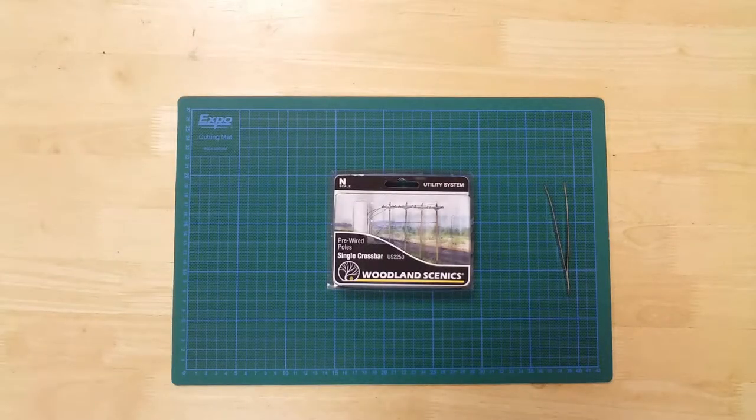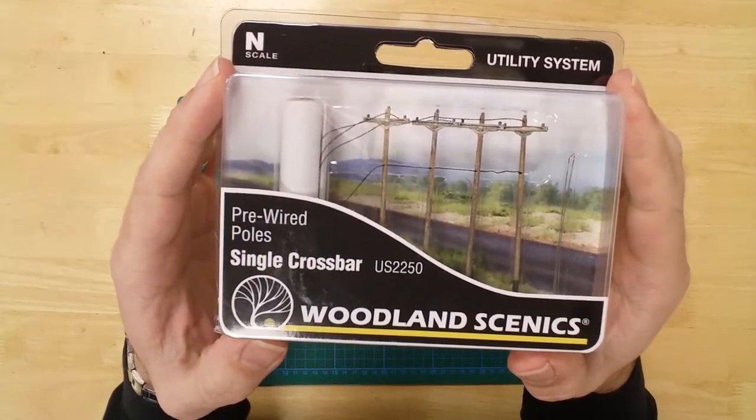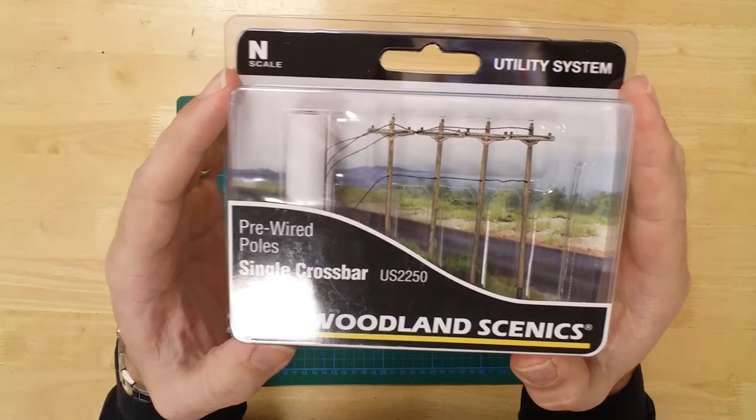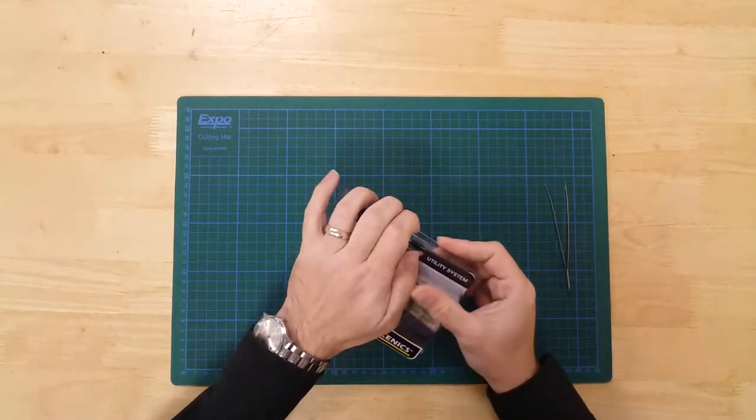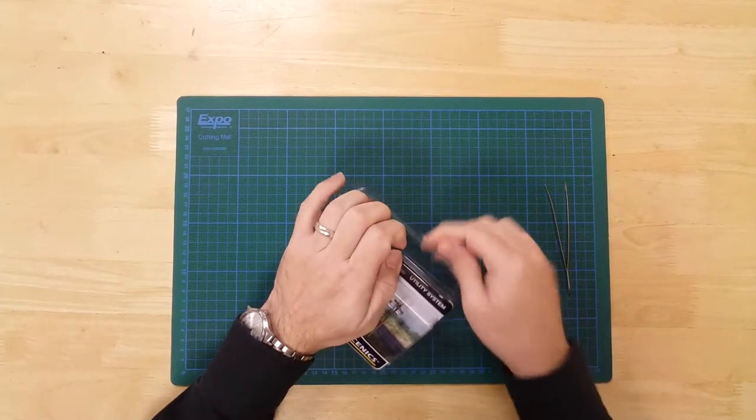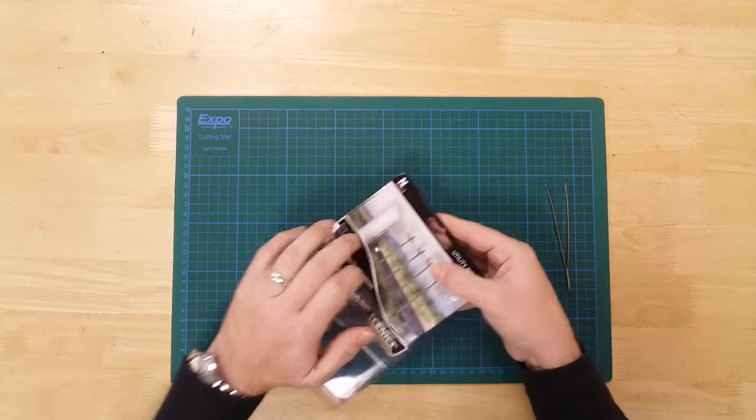This is a set of single crossbar telegraph or power line poles in N-gauge by Woodland Scenics. The models come fully detailed, painted, and with line pre-attached ready for use.